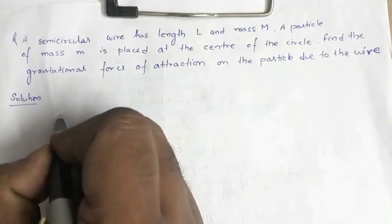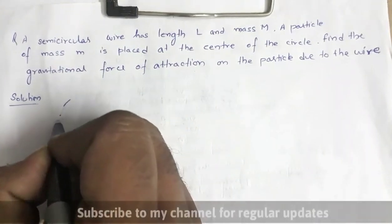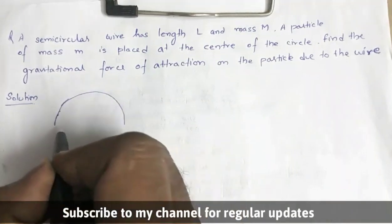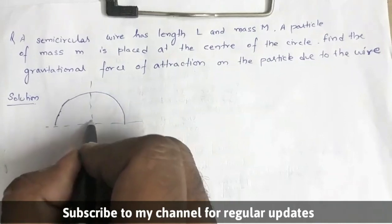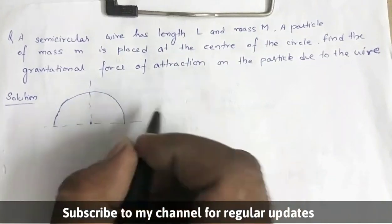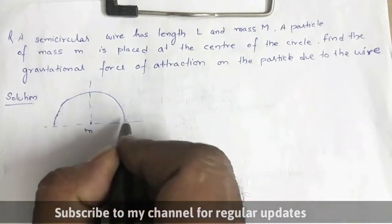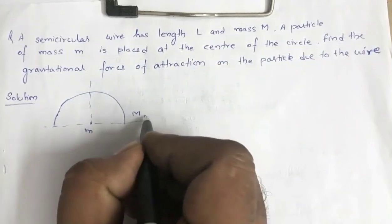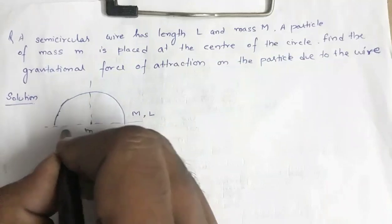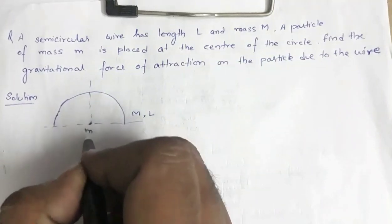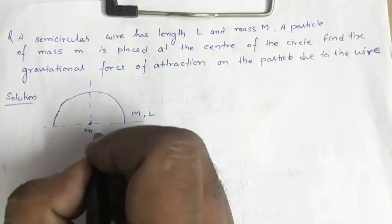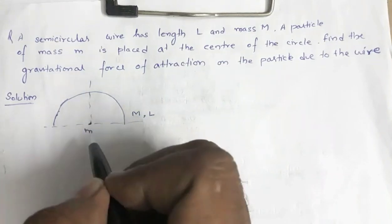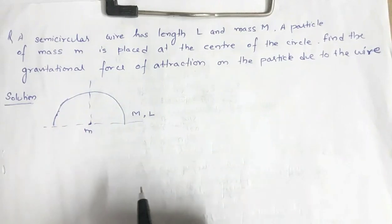The question says that you have a semicircular wire and at its center, a mass small m is placed. This is a semicircular wire of mass M and length L, and at the center of the wire, mass small m is placed. We are asked to calculate the force of attraction between this wire and this small mass.